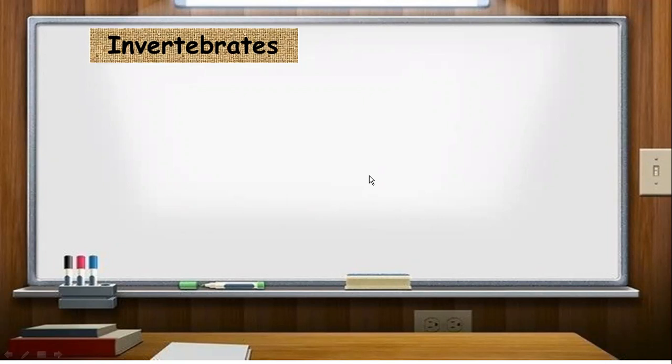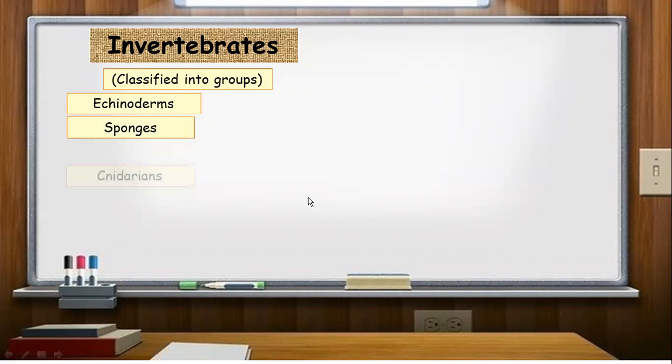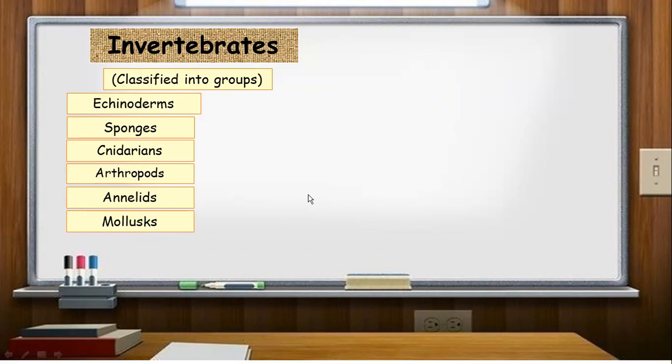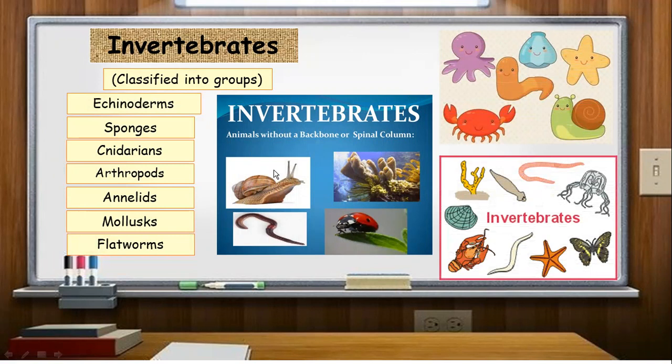Very good. Let's continue. So let's discuss first about invertebrates. Here, we will just focus on the groups of vertebrates. We discussed that one way before. So invertebrates are classified into seven groups. Here, we have echinoderms, sponges, cnidarians, arthropods, annelids, mollusks, and flatworms. These are the groups of invertebrates. As you can see, we discussed that one way back before. So that is invertebrates.